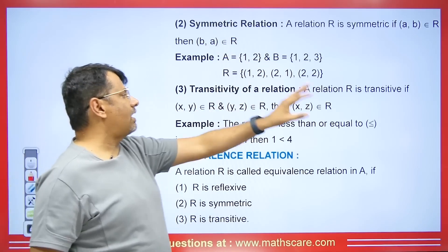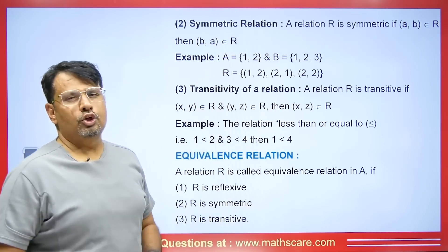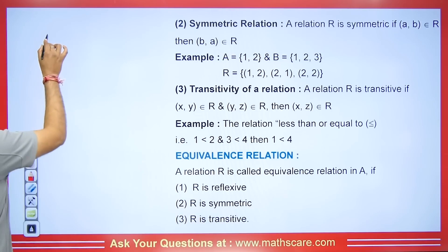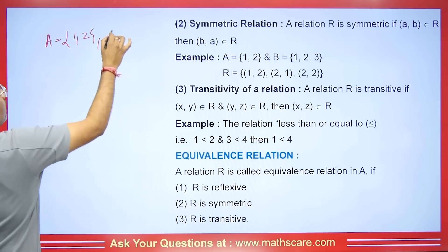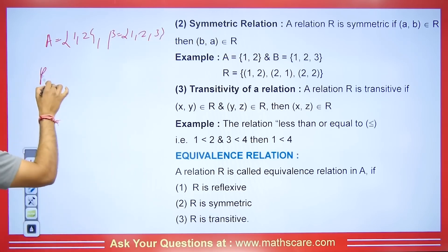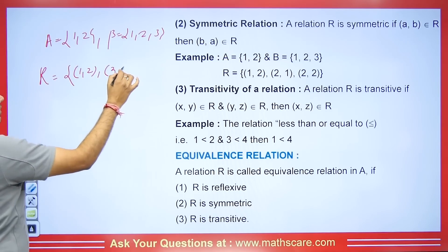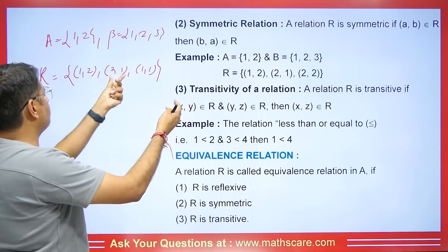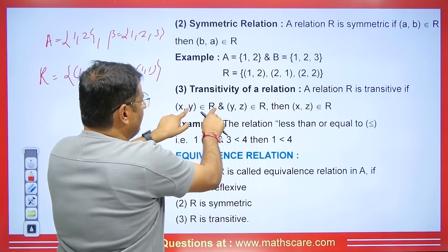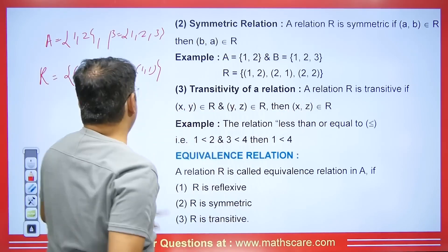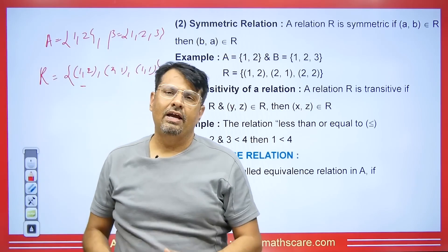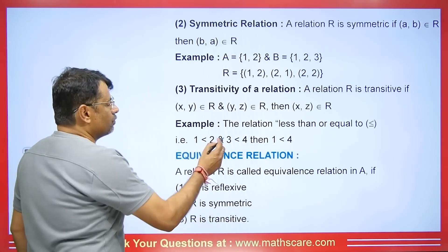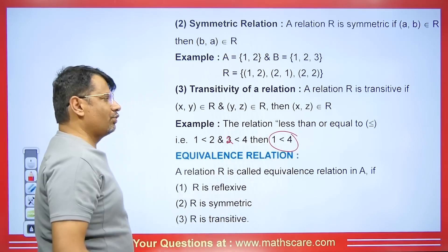We will talk about transitive relation. A relation R is transitive if (x, y) belongs to R and (y, z) belongs to R, then (x, z) should also belong to R. For example, suppose A = {1,2} and we have relation R = {(1,2), (2,1), (1,1)}. Here (1,2) and (2,1) are in R, and removing the middle element gives us (1,1), which is also in R — so it is transitive. Using the less-than concept: if 1 < 2 and 2 < 4, then 1 < 4, so this relation is transitive.